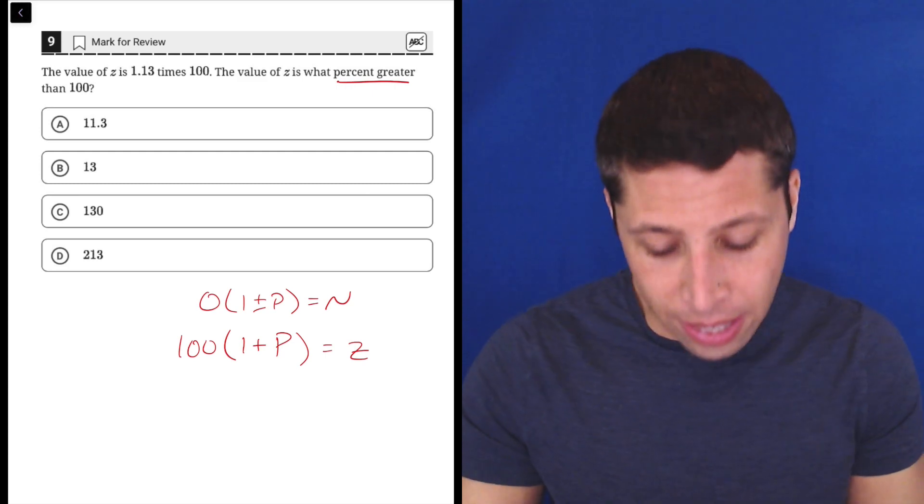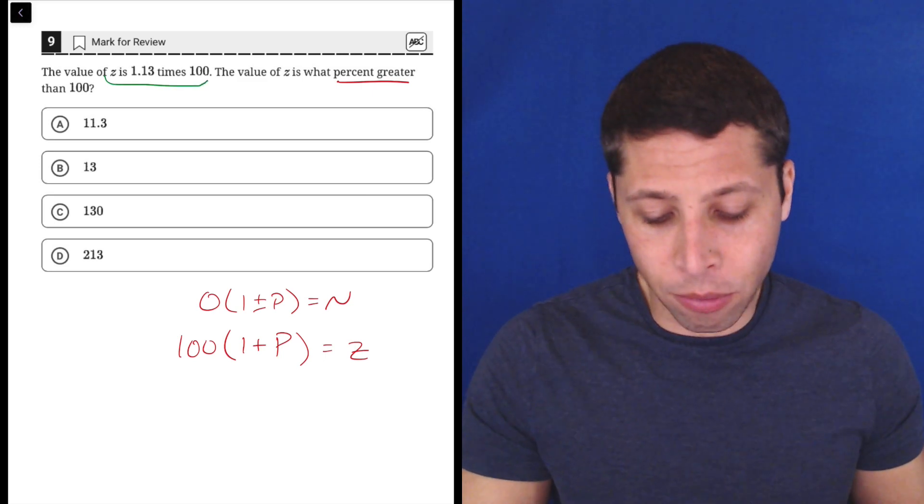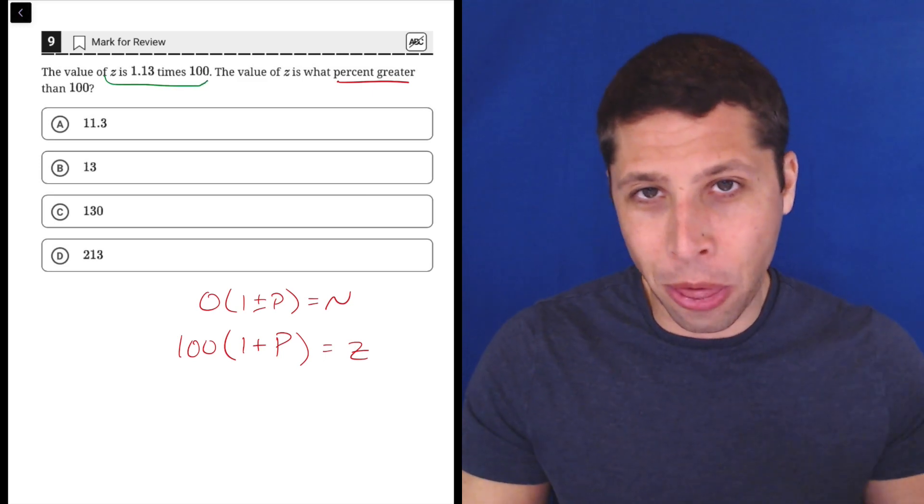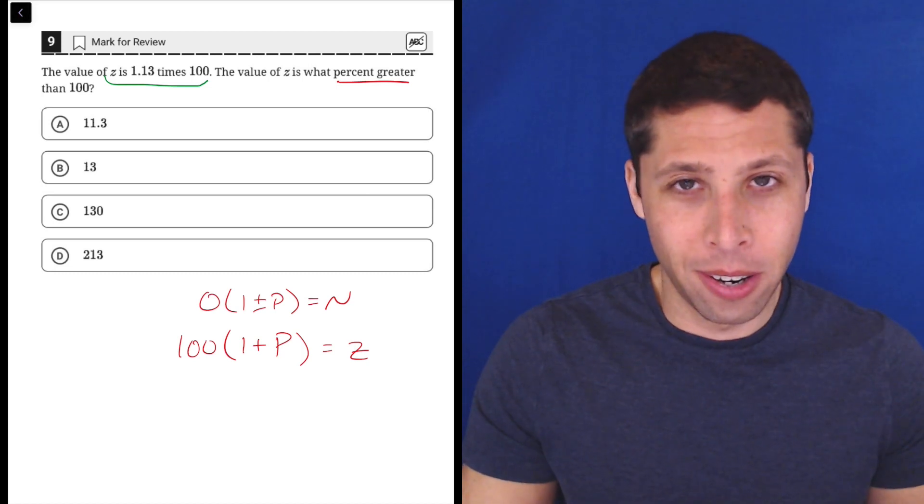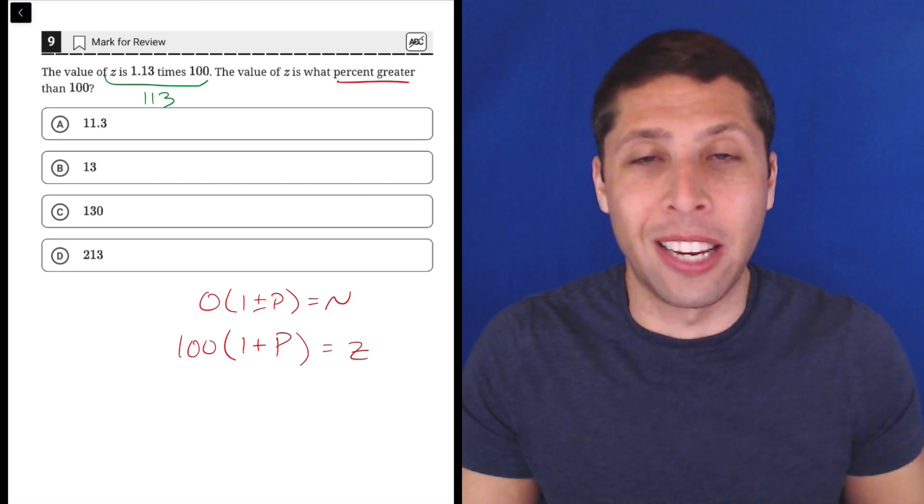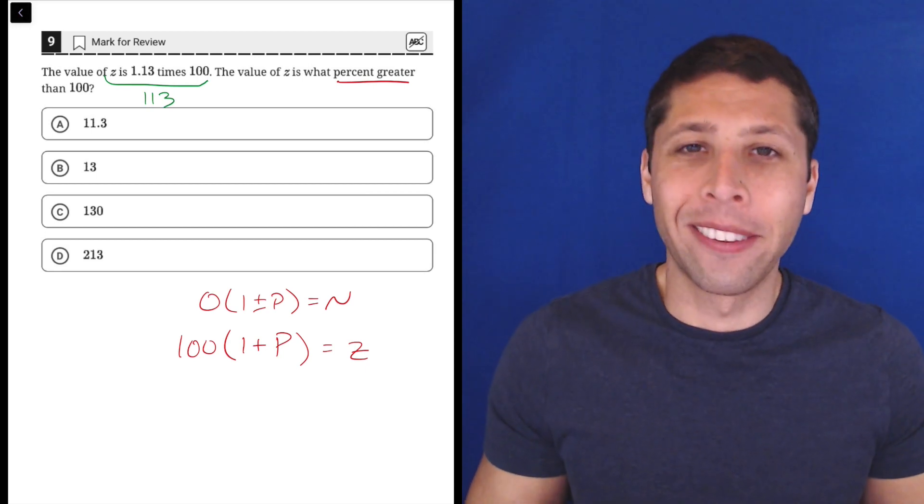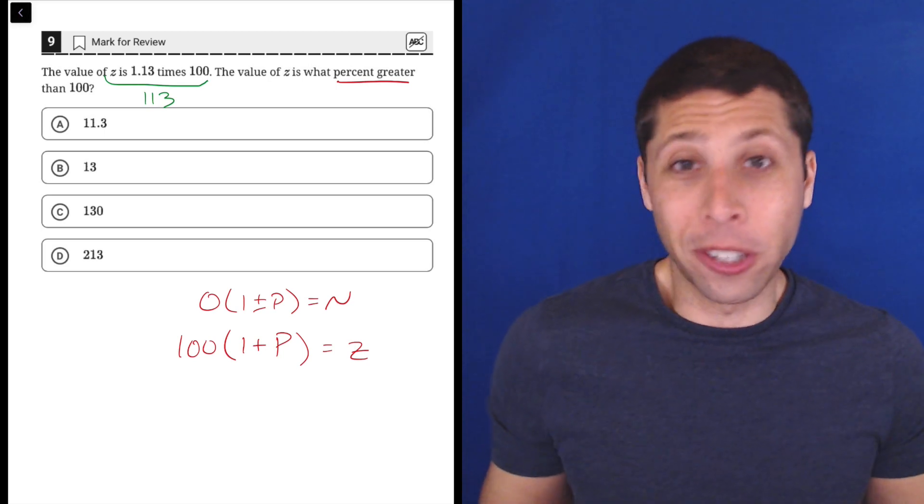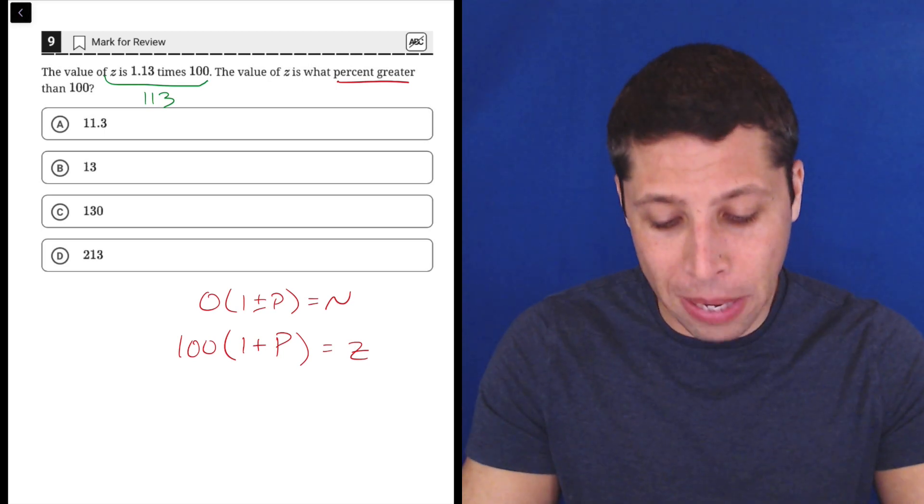And weirdly, they tell us the value of Z, but they do it in this really strange way, right? They're saying Z is 1.13 times 100, which you don't even need to calculate for this. That's just 113. Why do that? There's really no reason. Why not just say Z is 113? Well, they know they're going to confuse you or at least confuse some people.